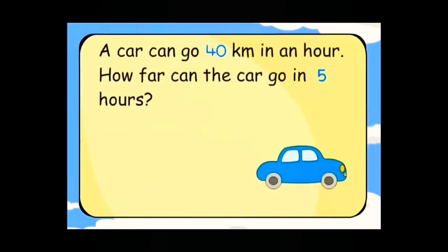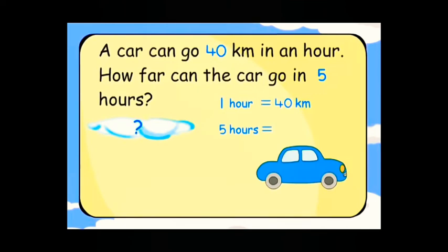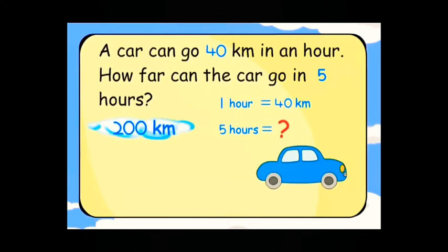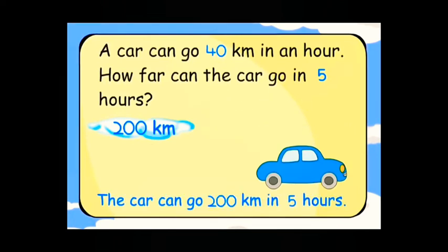A car can go forty kilometres in an hour. How far can the car go in five hours? One hour is equal to forty kilometres. Five hours is equal to two hundred kilometres — forty into five, that is two hundred. The car can go two hundred kilometres in five hours.